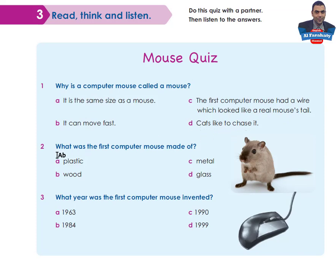Question 2: What was the first computer mouse made of? Plastic, Wood, Metal, or Glass? Question 3: What year was the first computer mouse invented? 1963, 1984, 1990, or 1999? You are asked to do this quiz with a partner. You can search for the answers or guess them. Take your time, then come back to check your answers.